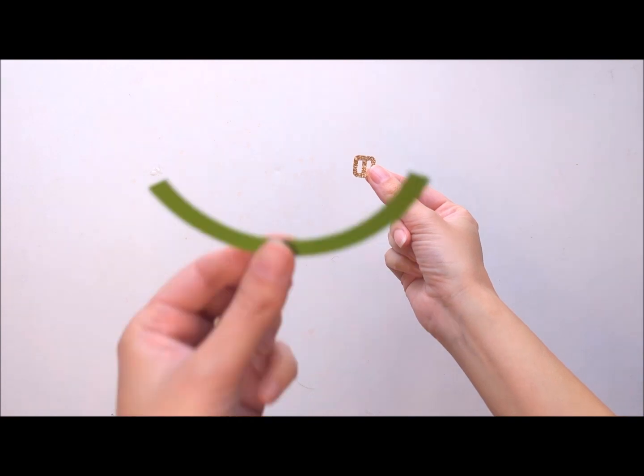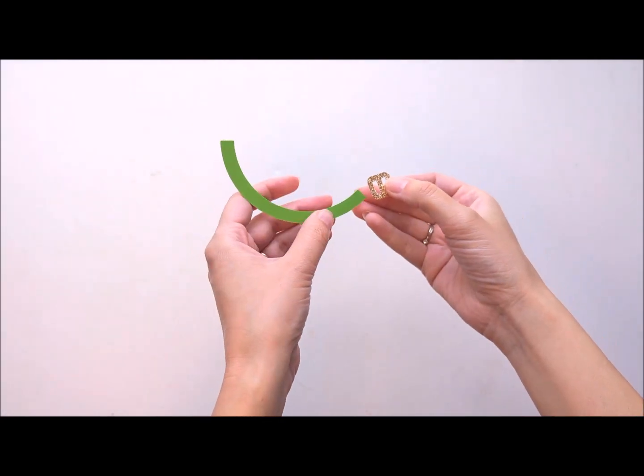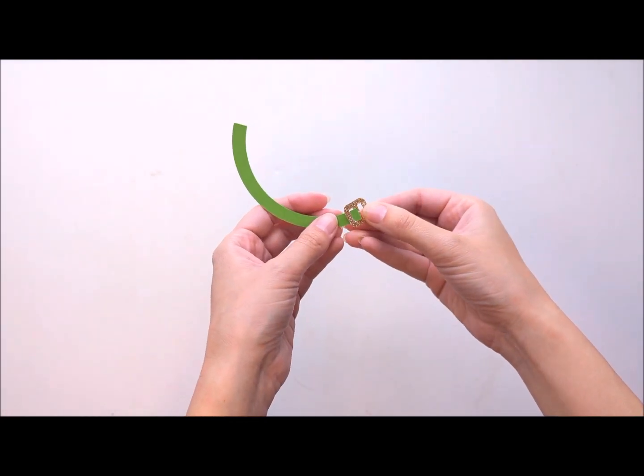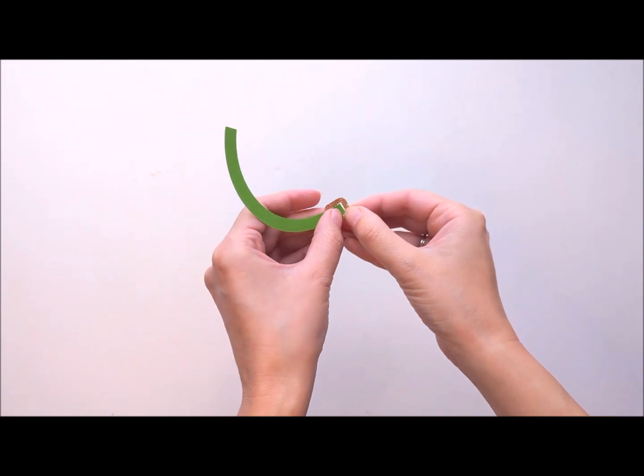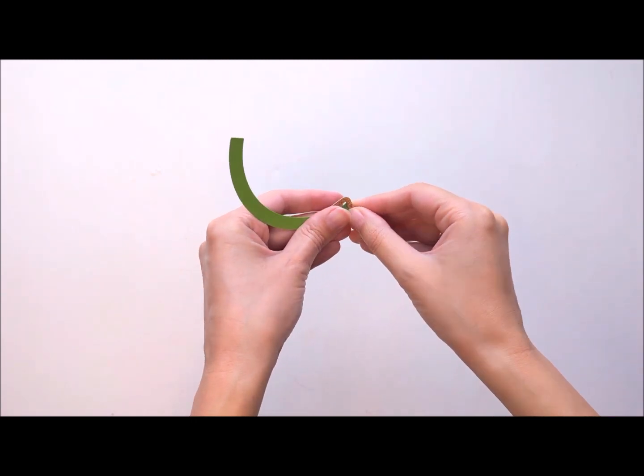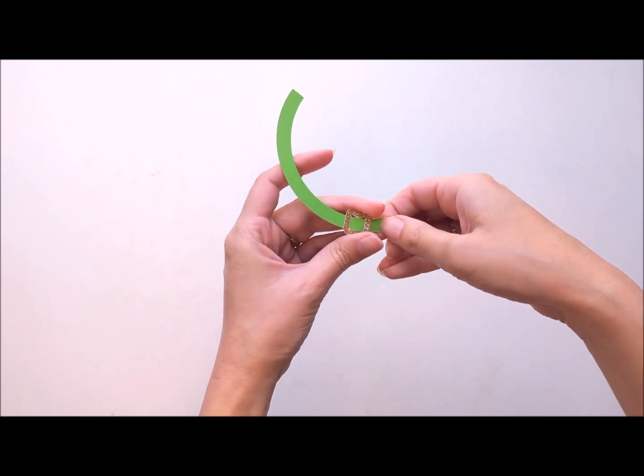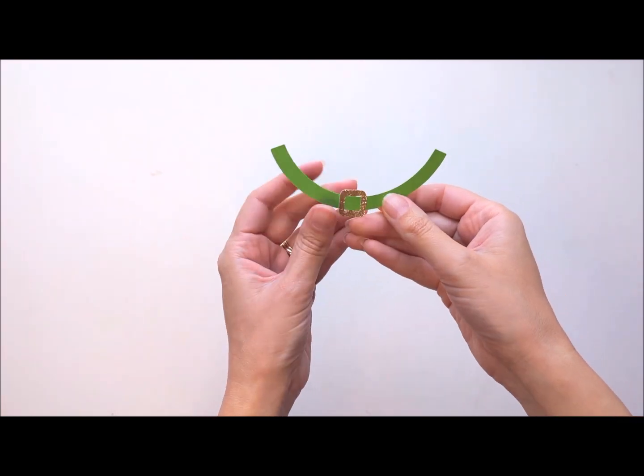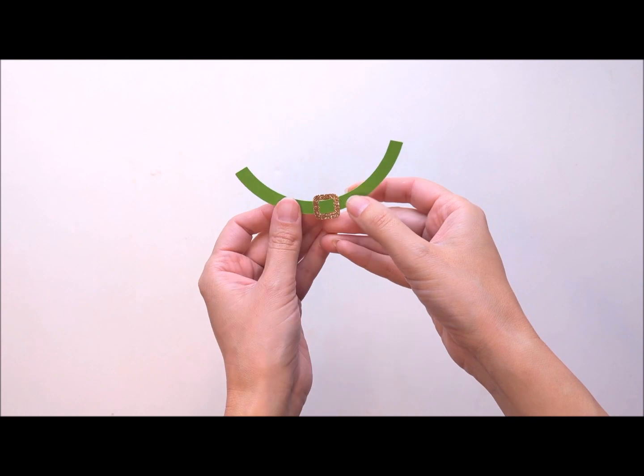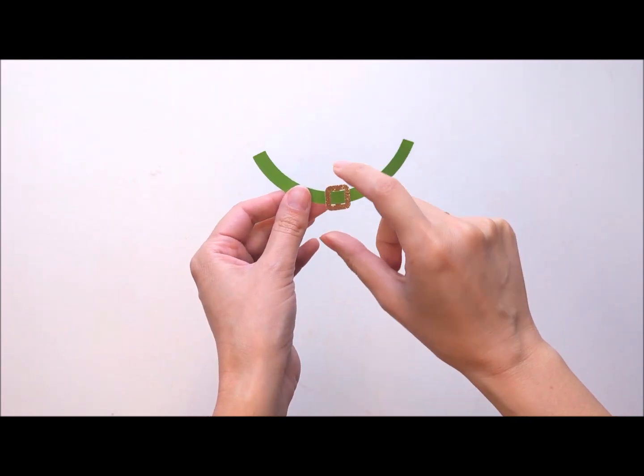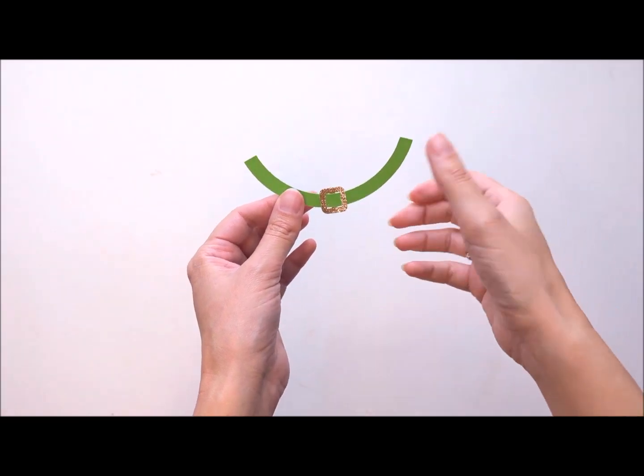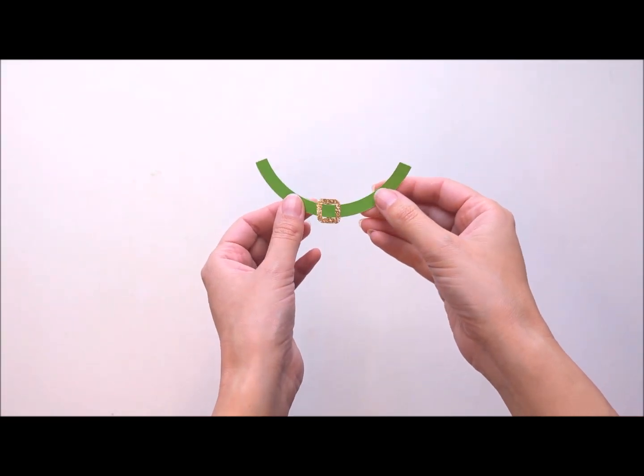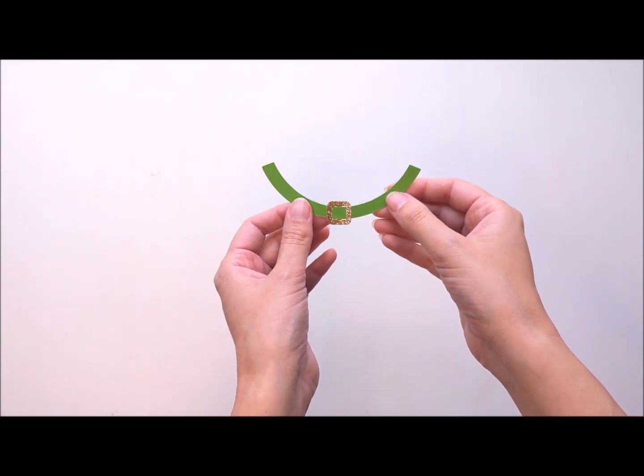The next step is we're going to take our buckle and our band and we're just going to slide the band and buckle together. So you're just going to put it on just like a regular belt buckle. You're just going to slide that through that little hole in the buckle and kind of bring it down to the middle. And for the buckle, if you want to use glitter, that's fine because you actually don't need any glue for the buckle. It's just going to attach by being strung through there. So that's a good opportunity to use glitter if you're wanting to use glitter paper for that.